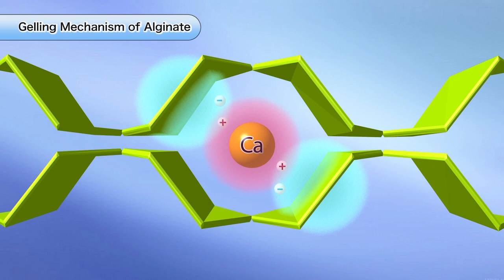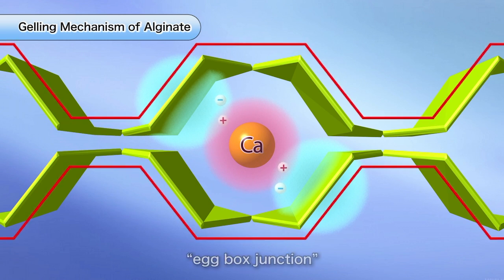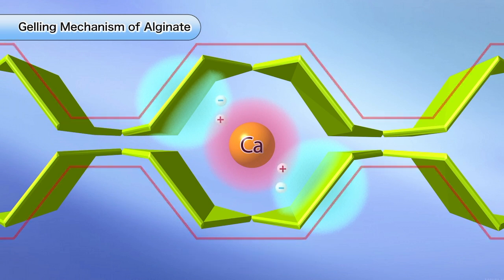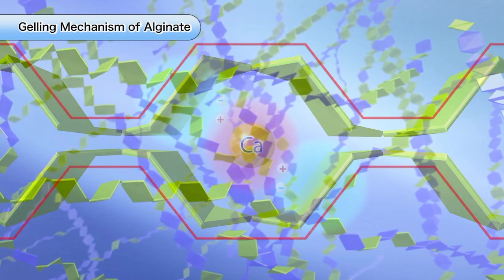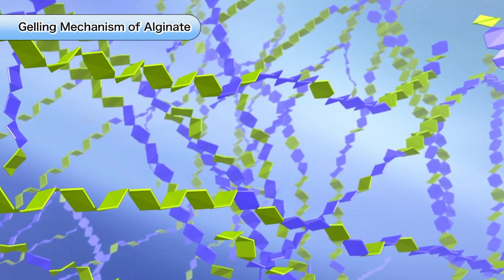This phenomenon is known as an egg box junction, after its visual similarity to an egg in an egg carton. This reaction occurs instantly throughout the solution.